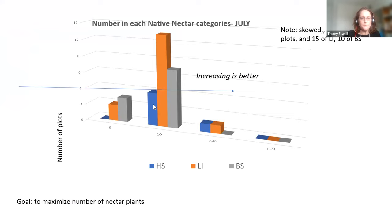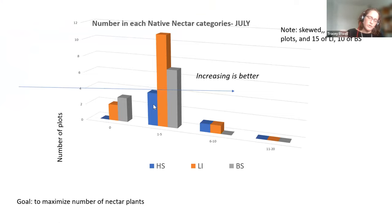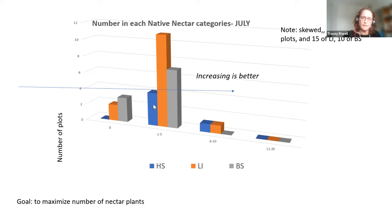This graph shows the number of plots in each category for hydro seeding, low intensity, and boom spraying, looking at native nectar plant counts — zero, one to five, six to ten, eleven to twenty. We want the trend to move toward higher categories. Boom-sprayed sites cluster at zero and one to five, dropping off quickly, while low-intensity and hydro-seeded sites show more in the higher categories. Note there is some data skew: only 5 hydro-seeded plots versus 15 low-intensity and 10 boom-sprayed.